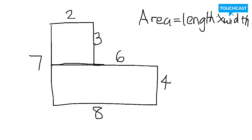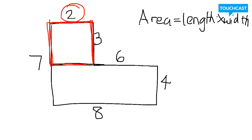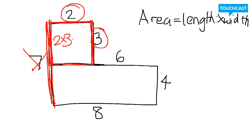Alright, we're back. Let's see if your total area matches my total area. Let's take a look at the top rectangle — I'm going to do this one in red. Let's figure out the length and the width. What is the length of this side? Two. And now let's look at the length of this side — is it three or is it seven? It's not seven because seven is the length of the entire shape. It's actually three. So the area is two times three equals six.